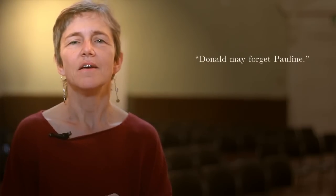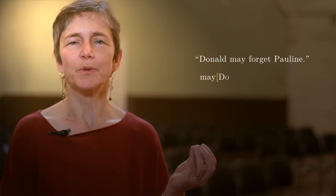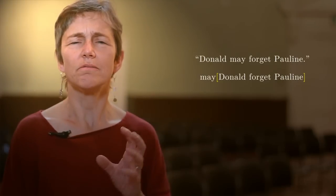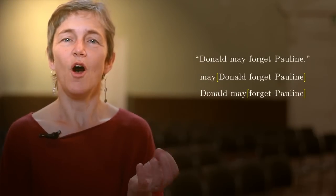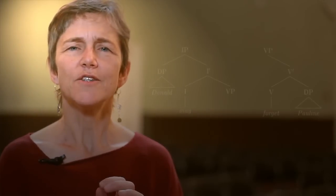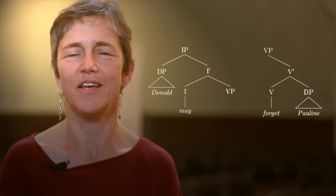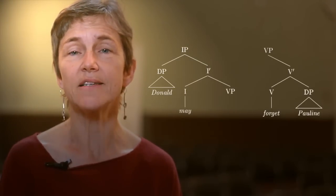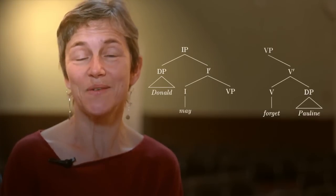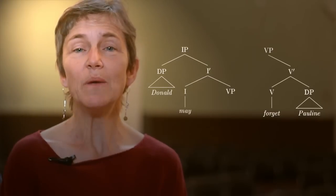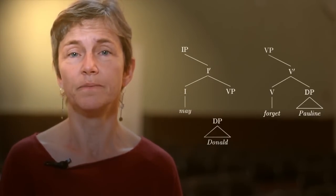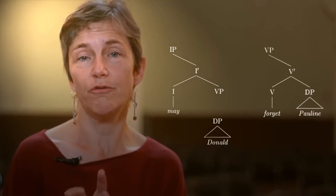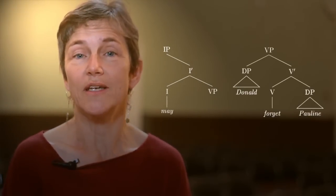Semantically, modals take scope over the entire proposition. A sentence like 'Donald may forget Pauline' means something like 'it's possible that Donald forgets Pauline' — the scope of the modal should include the subject and the whole proposition. So those elementary trees can't be right; they don't reflect the selectional properties of those heads, which is what elementary trees represent. We really want to show that the modal isn't selecting the subject, so the subject doesn't appear in the modal's elementary tree — it appears in the elementary tree for the verb.